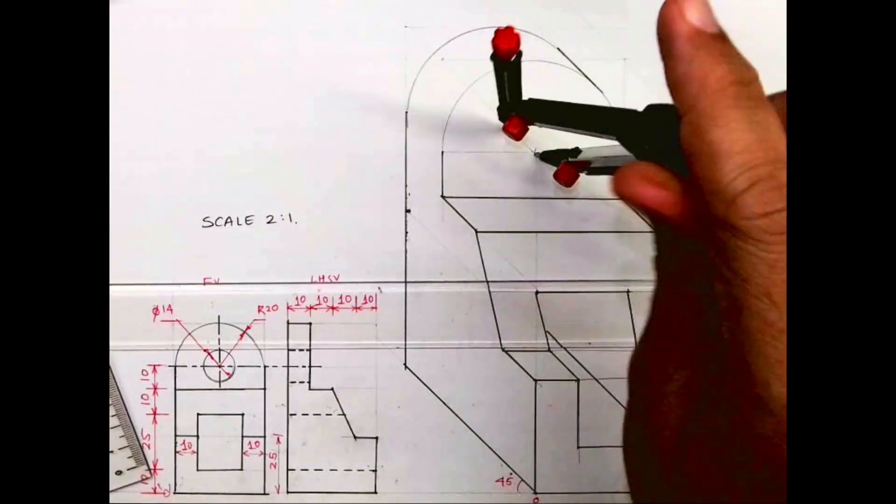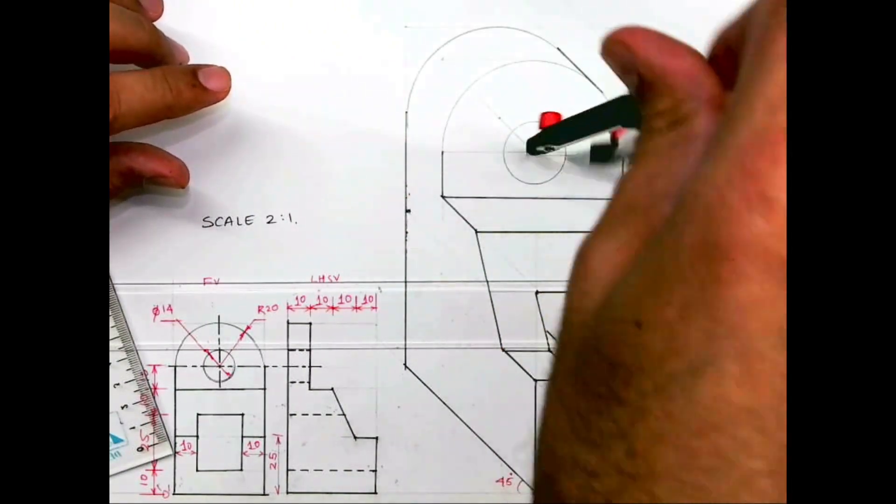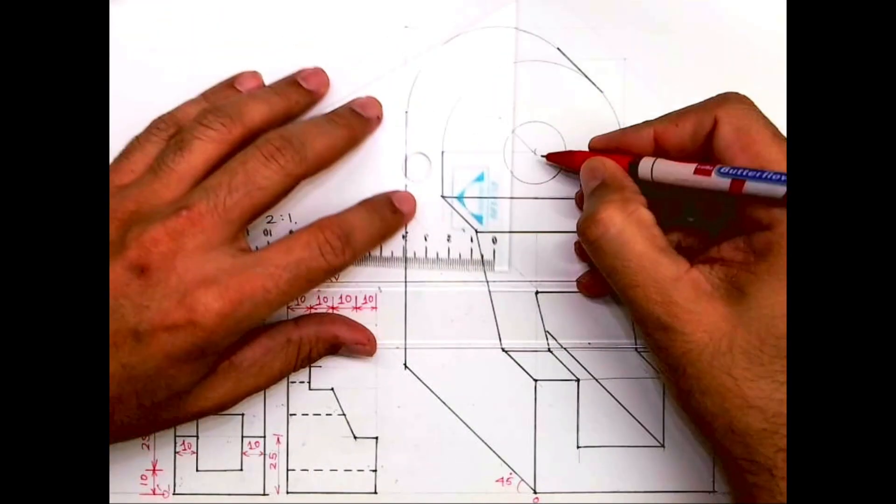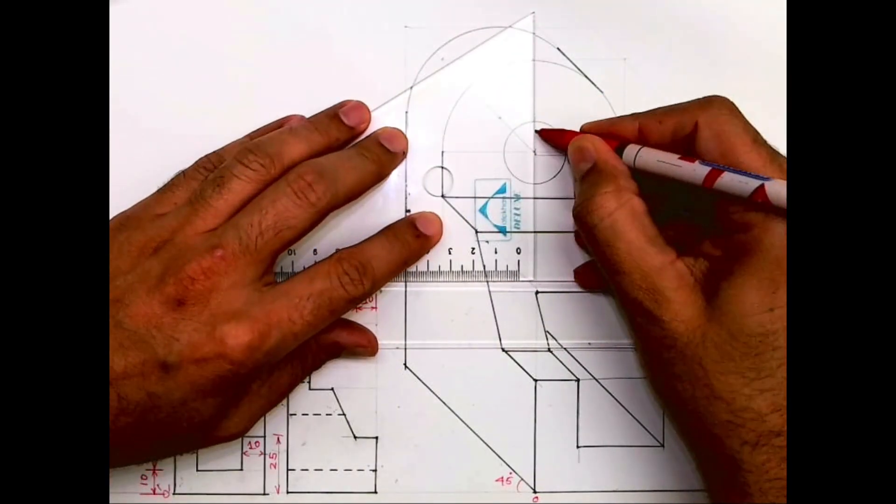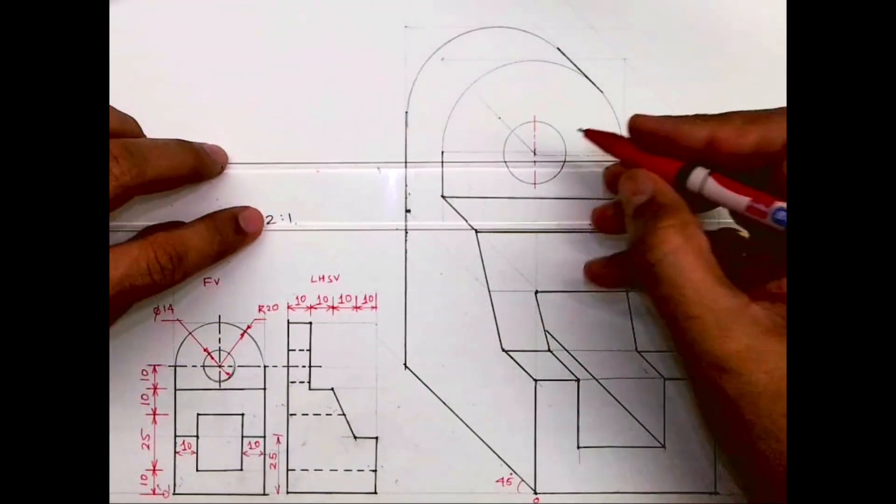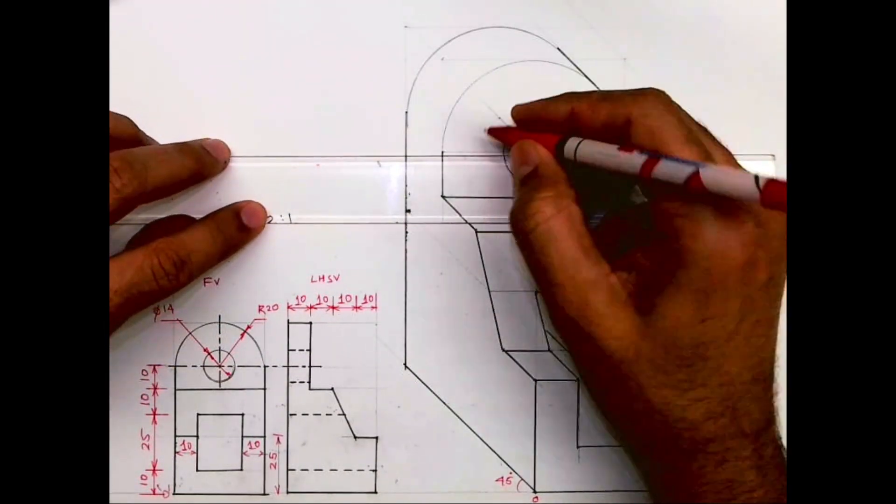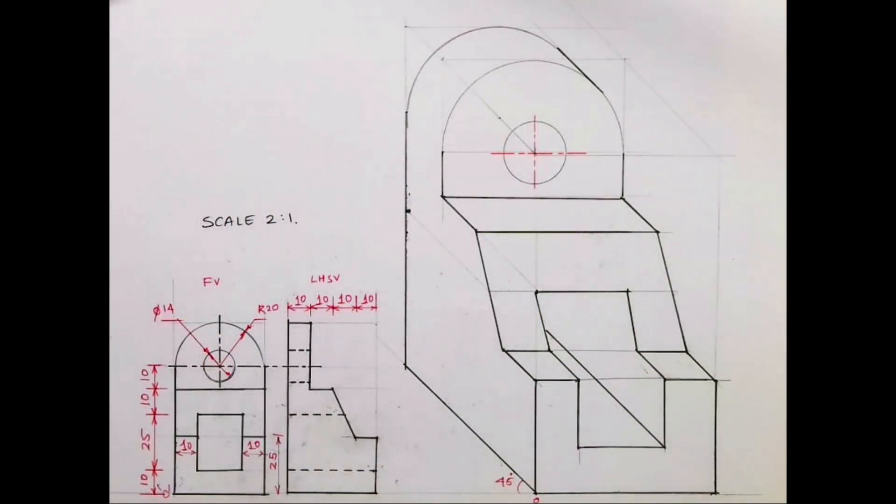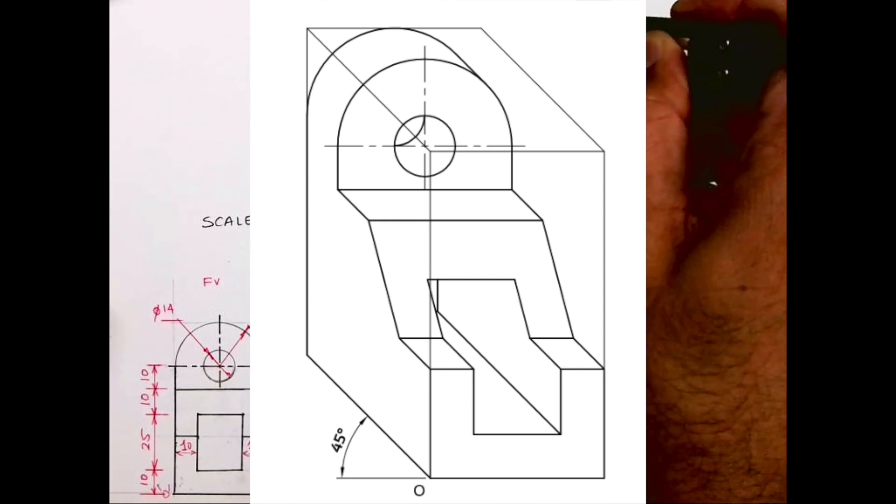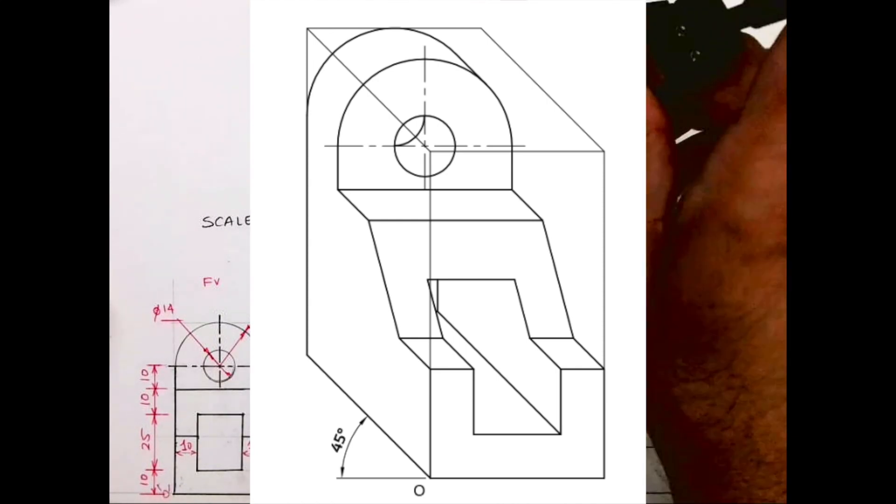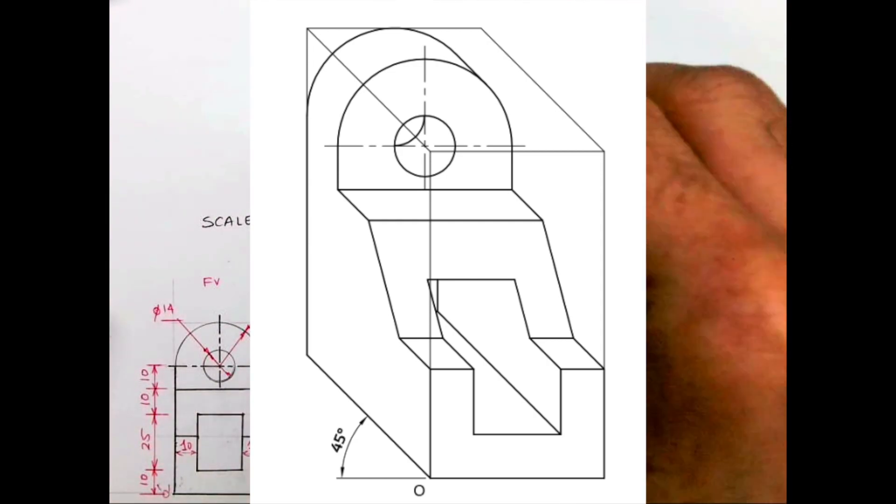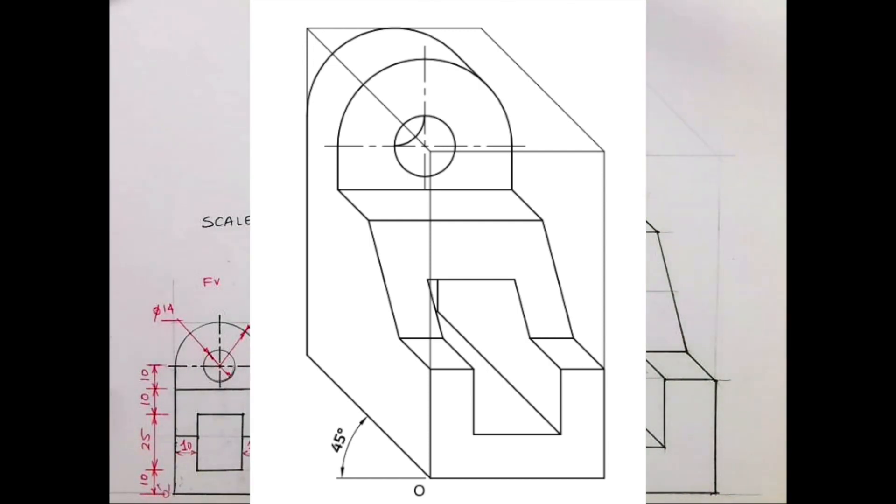Now see, here also we will draw radius 7, so that is 14. We will draw a circle. And from this point we need to go behind by 20 and again we need to draw radius 14. See, you take that radius, you go behind by 20, and again you draw radius. So it will come like this. So I hope you people have understood this. Thank you.